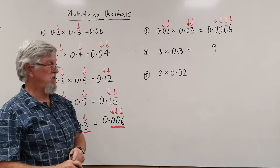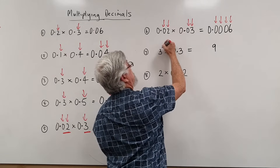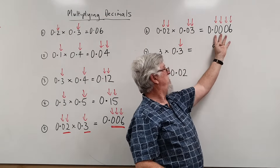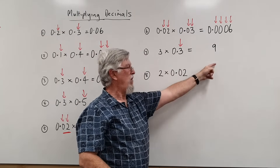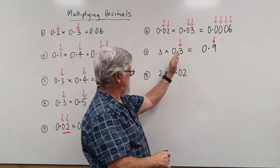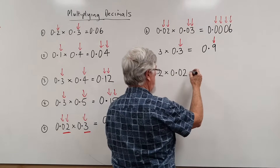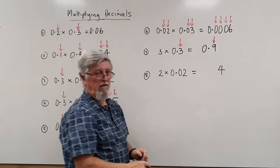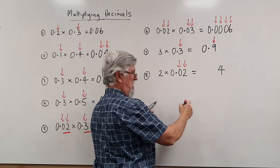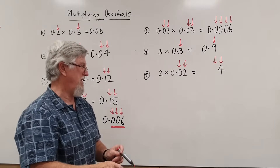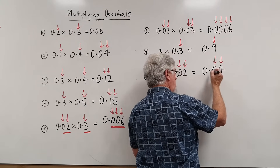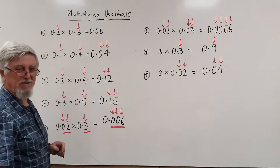Here's another one that trips students up: 3 times 0.3. Three threes are nine. This one has no decimal places, and this one has one, so the answer has one decimal place. No decimals times one decimal gives one decimal place — so there's my one number starting that way and I put a dot in front: 0.9. And for 0.02 times 0.02: two twos are four, no decimals on one side, two on the other — so I need two decimal places, giving 0.04.